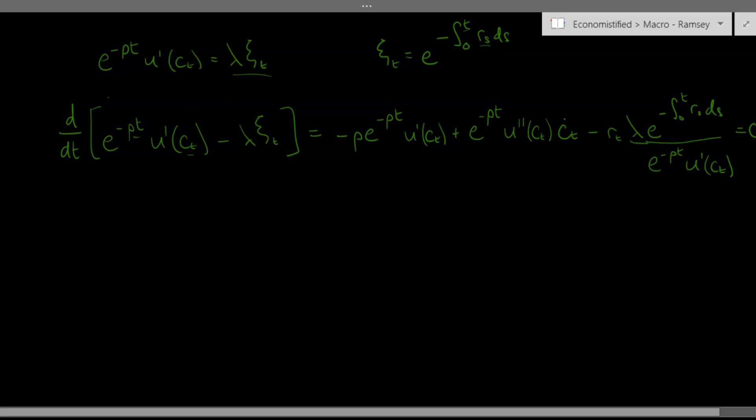So now we can divide both sides of this equation by discounted marginal utility, e to the minus rho t times u prime of ct. Let's divide this here, this here, this is going to cancel. The e to the minus rho t here is going to cancel, and here we're going to get divide by u prime of ct.